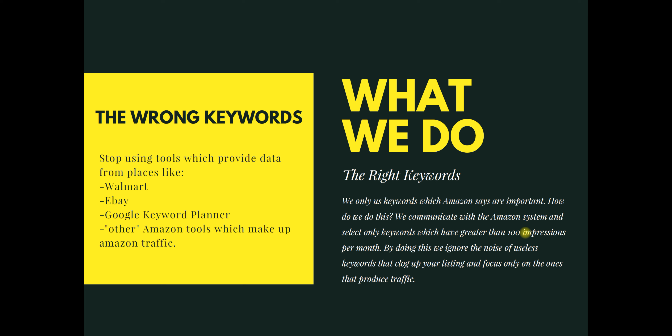The next thing we notice is sellers focus on the wrong keywords. They start using tools that old professionals used to use, like Market Samurai or Scrapebox or other tools that generate suggestions from things like Walmart, eBay, Google Keyword Planner, and other Amazon tools which kind of just make up the traffic. Just a little heads up — Amazon never gives the exact number of traffic that comes from a keyword. They never have and they never will.